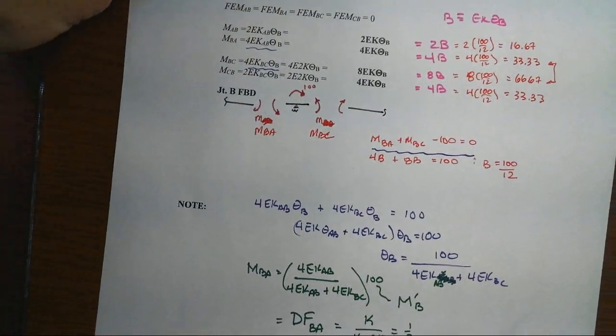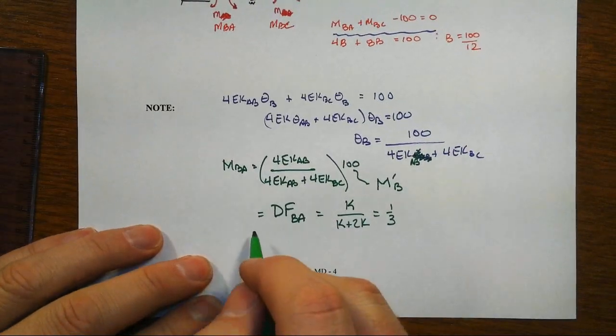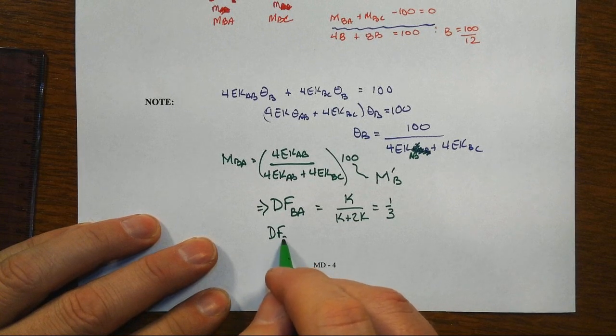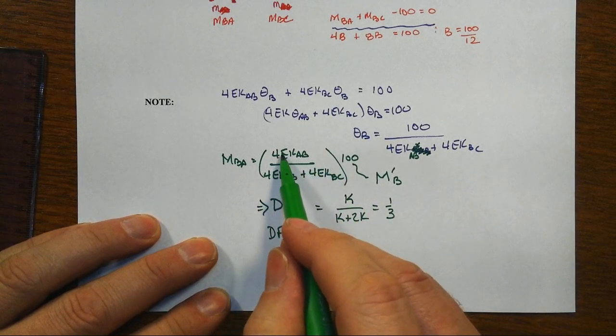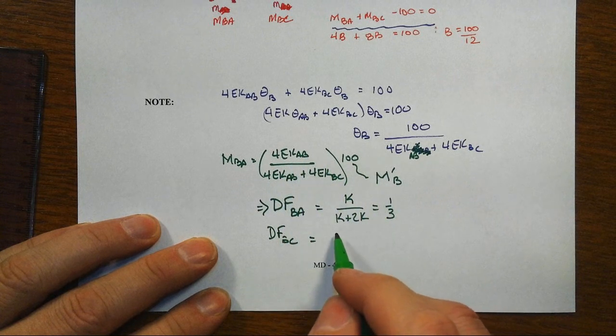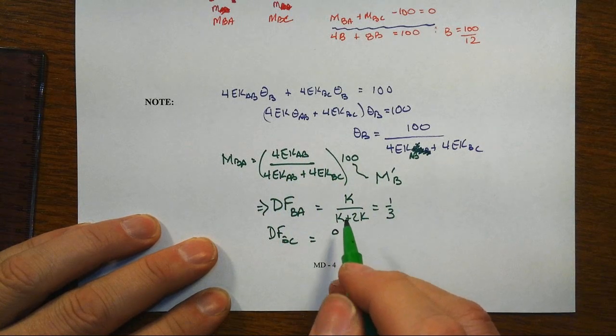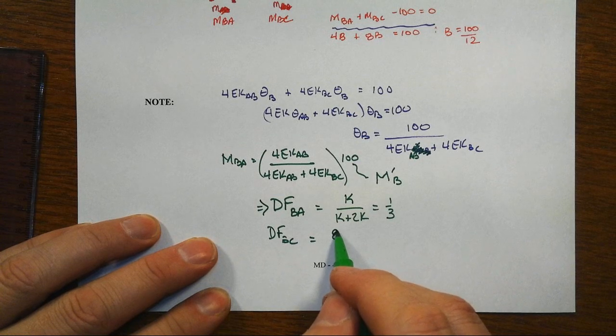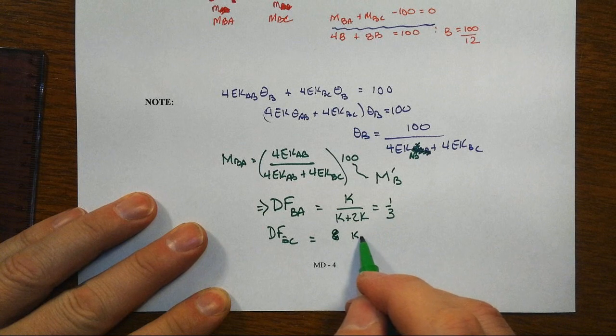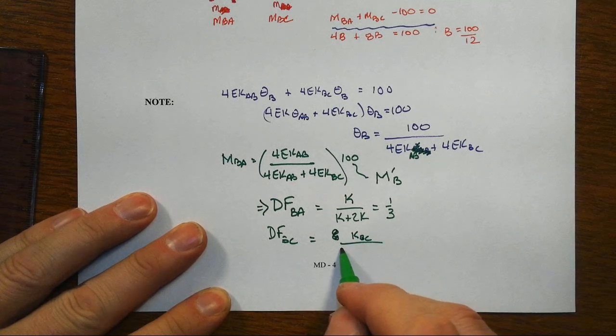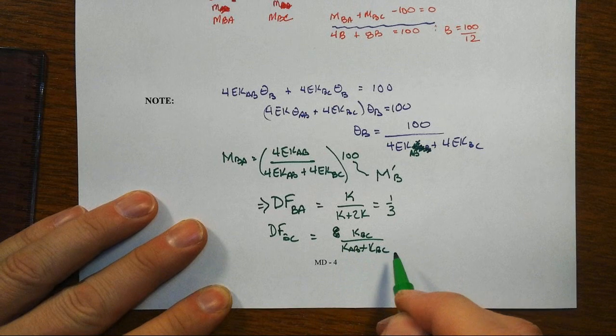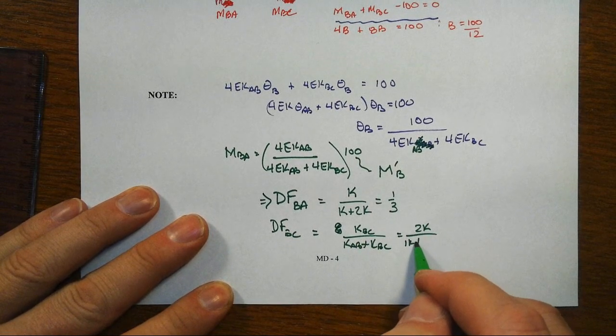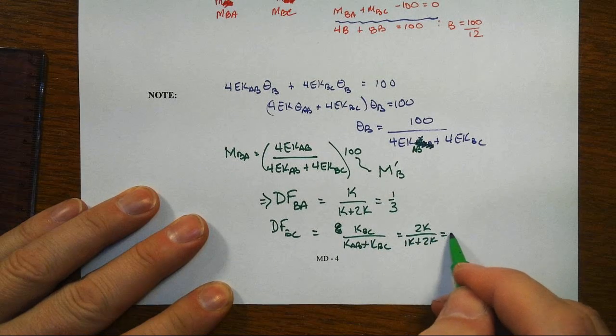Because that, of course, is what we're going to get when we go look at then the distribution factor for BC, right? Because now this is going to be 4EKBC, which will turn out to be KBC over KAB plus KBC. And that KBC is 2K over 1K plus 2K, or 2 thirds.